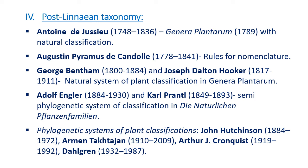After the publication of Darwin's theory of evolution, many phylogenetic systems of plant classification were published. The notable taxonomists are John Hutchinson, Armen Takhtajan, Arthur Cronquist, Dahlgren, and so on.